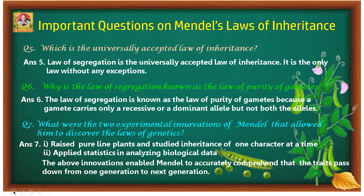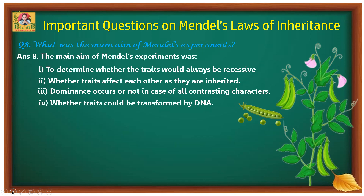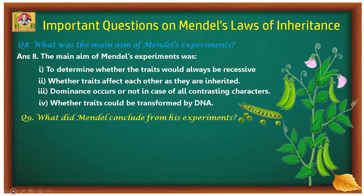The second innovation was that he applied statistics in analyzing biological data. These two innovations enabled him to accurately comprehend how traits are passed from one generation to the next, which later became known as the laws of genetics. Eighth question: the main aims of Mendel's experiment were: first, to determine whether traits would always be recessive; second, whether traits affect each other as they are inherited; third, whether dominance occurs in all contrasting characters; and fourth, whether traits could be transformed by hereditary material, now known as DNA.